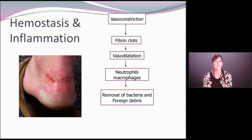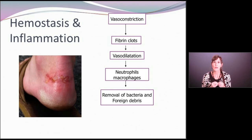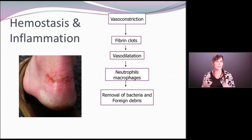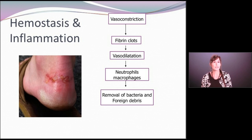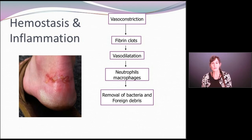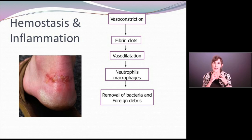Once vasoconstriction occurs, we have activation of the clotting cascade. The intrinsic and extrinsic factors come together and ultimately cause fibrinogen, a soluble protein in the blood, to be converted into fibrin, an insoluble protein. This fibrin forms a series of threads or a net that catches the platelets, forming a platelet plug or fibrin clot, which wards off blood flow, stops the bleeding, and stabilizes things — this is referred to as hemostasis.